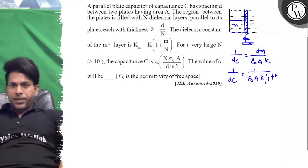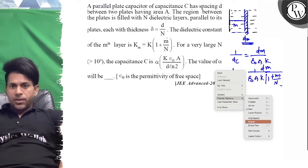K₁ plus small m by capital N, on top will be your dm. Now this will form an integration for you, so the integration will be...